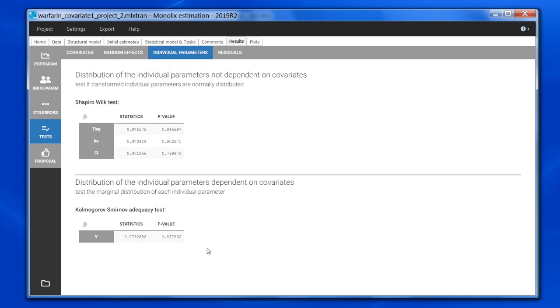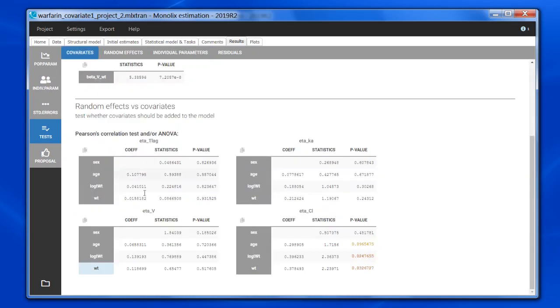To conclude, the diagnostic tests complement the diagnostic plots and guide the user to improve the model. The color code allows to easily detect the model elements that could be improved from a statistical point of view. Because the tests are based on the samples from the conditional distribution, they are very reliable. And finally, note that each test is done independently of the other tests.